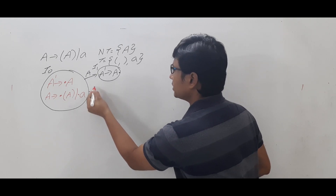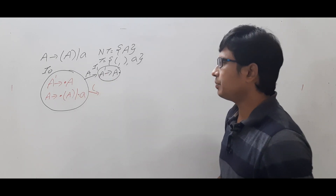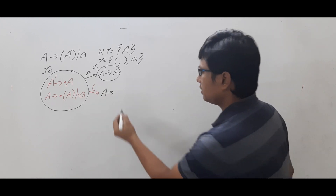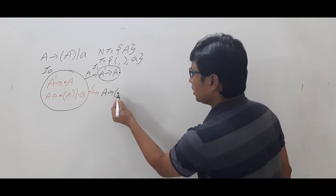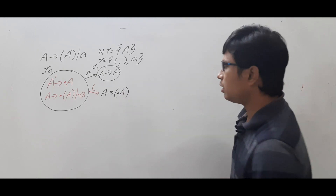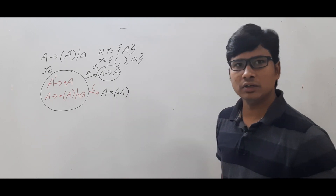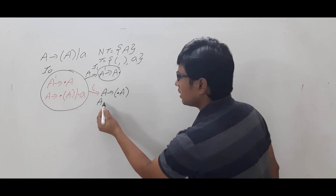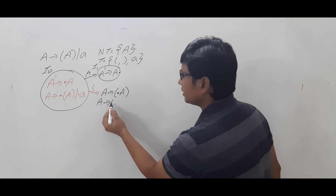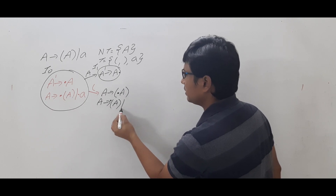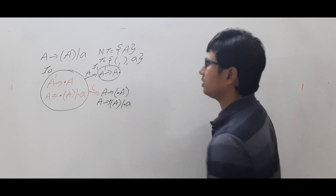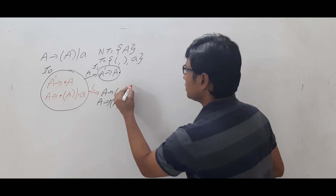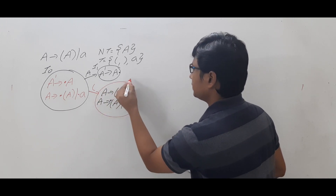Now we need to compute go to on open braces from I0. It becomes A → (•A). After the dot, a non-terminal A is there, so we compute the closure: write the productions of A and keep the dot in front. So I2 = { A → (•A), A → •(A), A → •a }. This is item number I2.